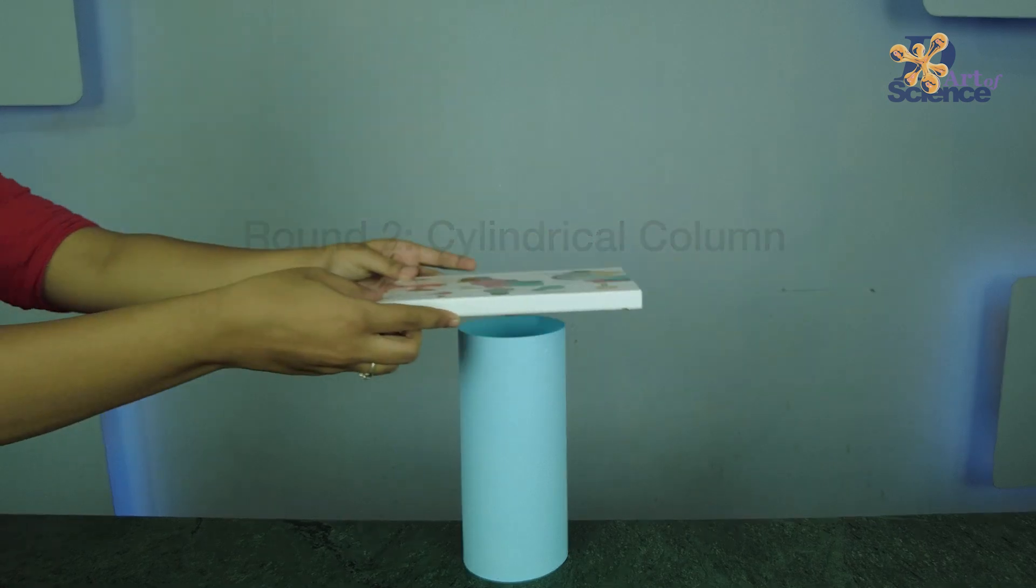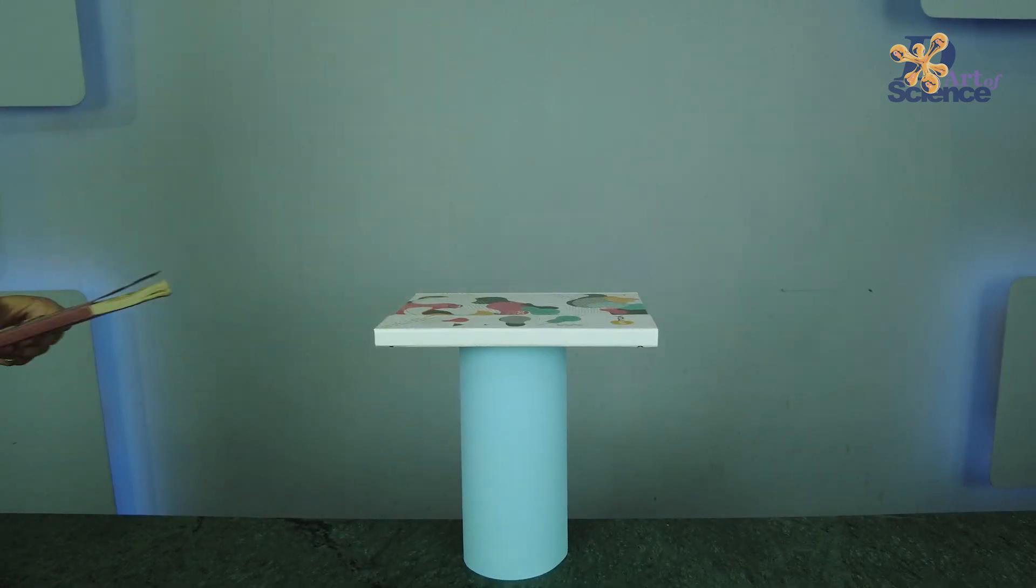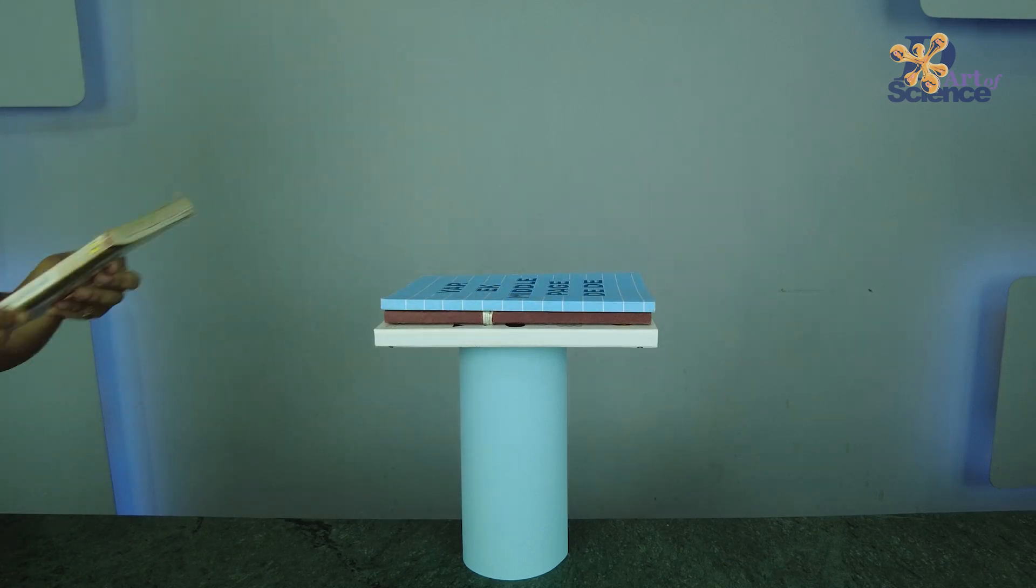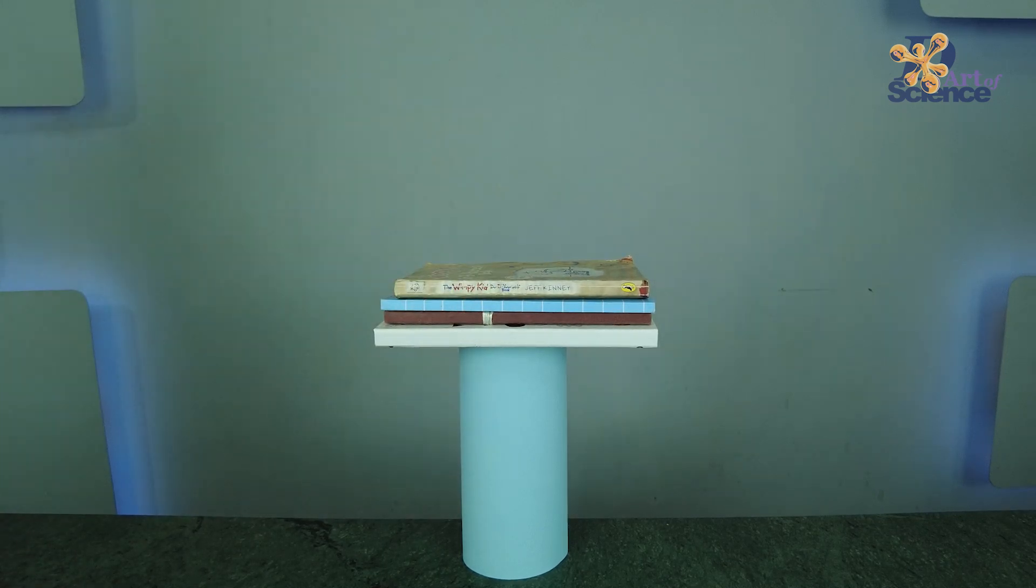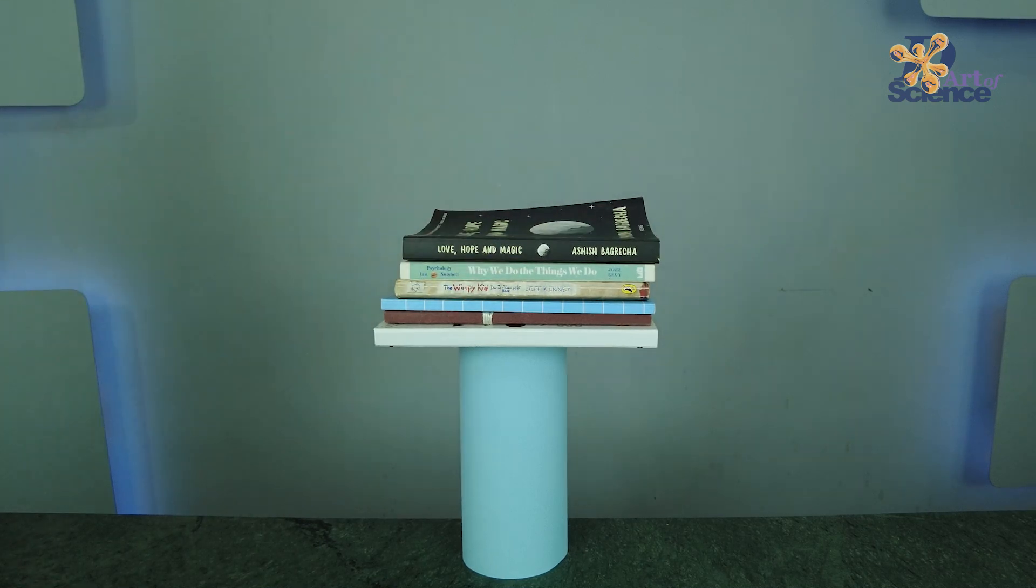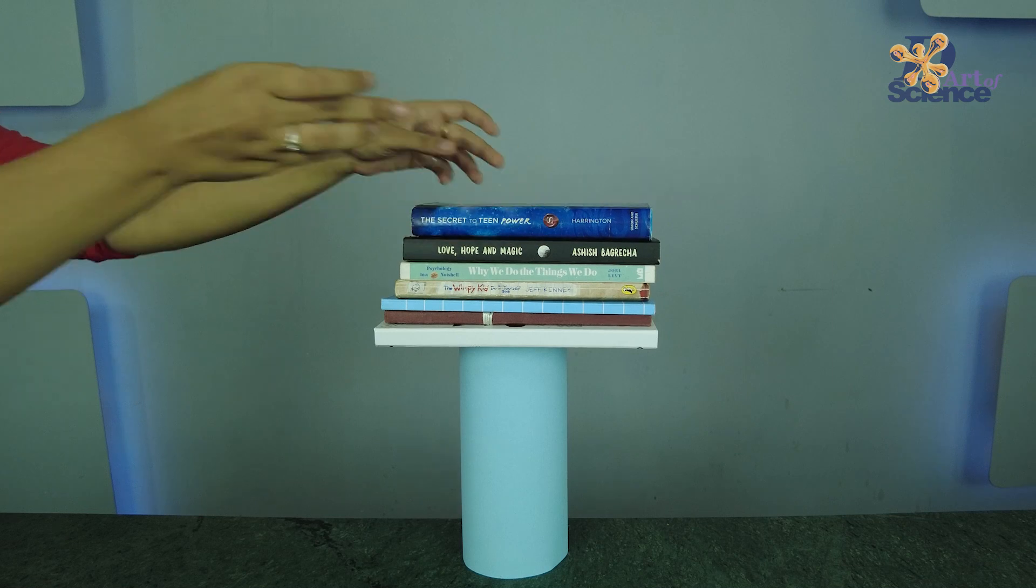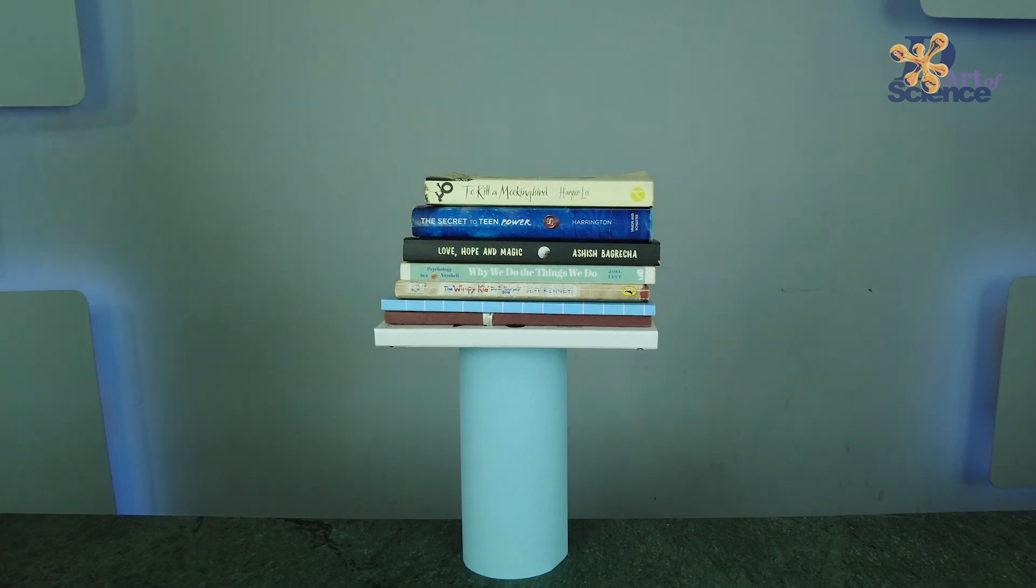The cylindrical shaped column is the strongest because it has no corners. Since it doesn't have any edges, the weight of the books is shared evenly by the circle. In case of hexagons, squares and triangles, they support these books on their edges and corners, which is why they collapse.